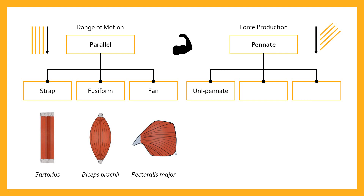The first type of pennate muscle is unipennate. In unipennate muscles, all fibers are oriented at the same angle and are all on one side of the tendon — hence 'uni,' meaning one. The pennation angle is usually somewhere between zero and about 30 degrees. A good example of a unipennate muscle is the fibularis.